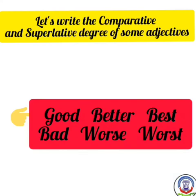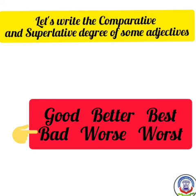Good ka poora form change ho jaata hai — good → better (B-E-T-T-E-R) → best (B-E-S-T). Bad → worse (W-O-R-S-E) → worst (W-O-R-S-T). Bad yaani bura, worse yaani usse bhi kharaab, worst yaani bilkul kharaab. Beautiful — comparative: more beautiful; superlative: most beautiful. Intelligent — more intelligent — most intelligent.